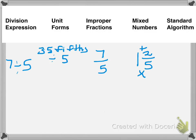Because you have those 35 little pieces of cracker and you're sharing them among 5 people. And 35 fifths divided by 5 equals 7 fifths. So your unit form is 7 fifths.